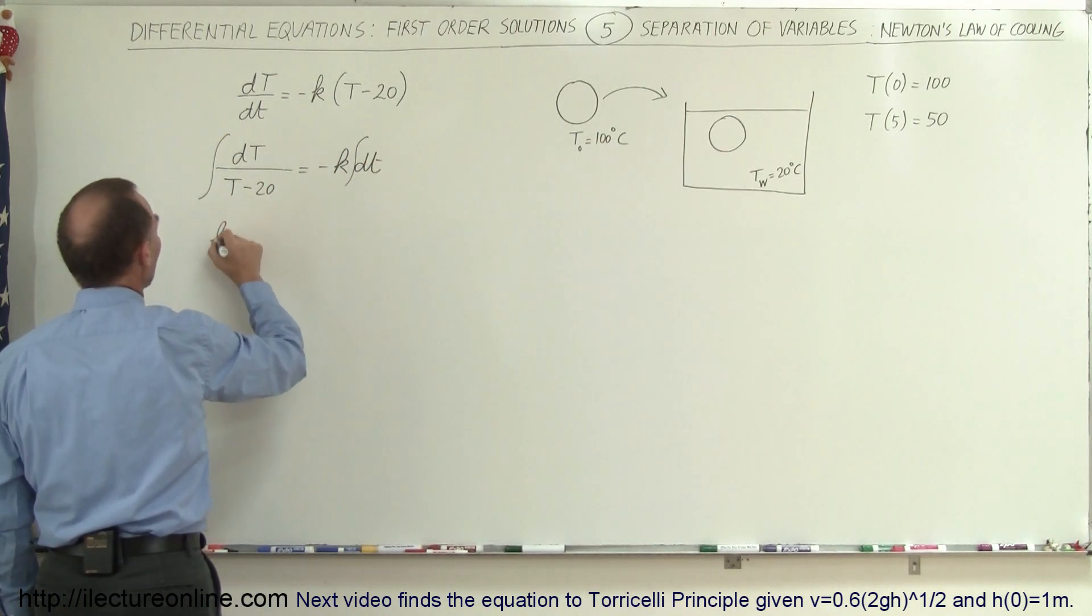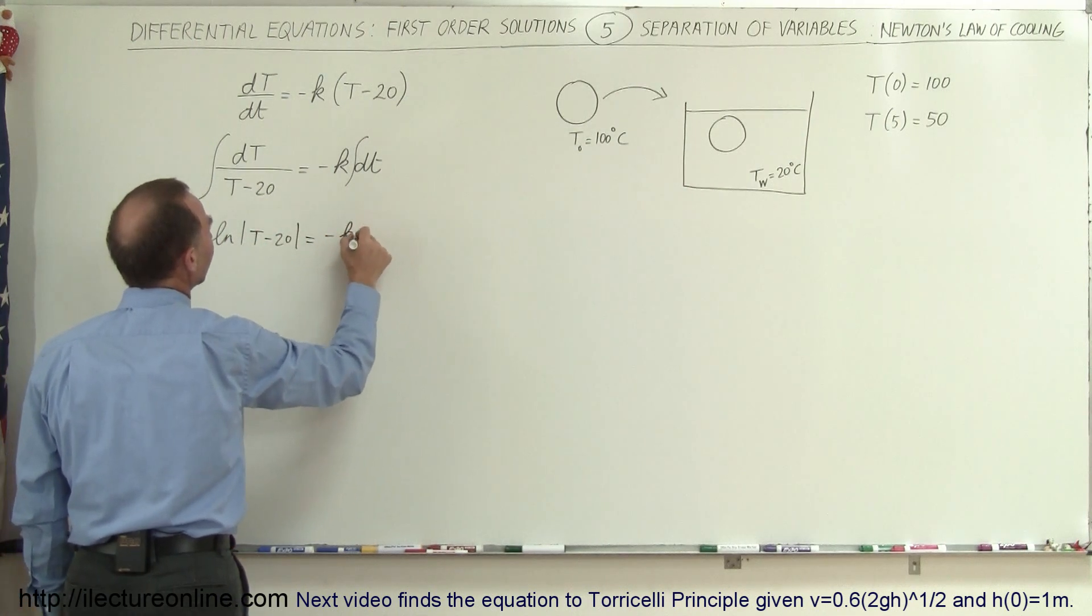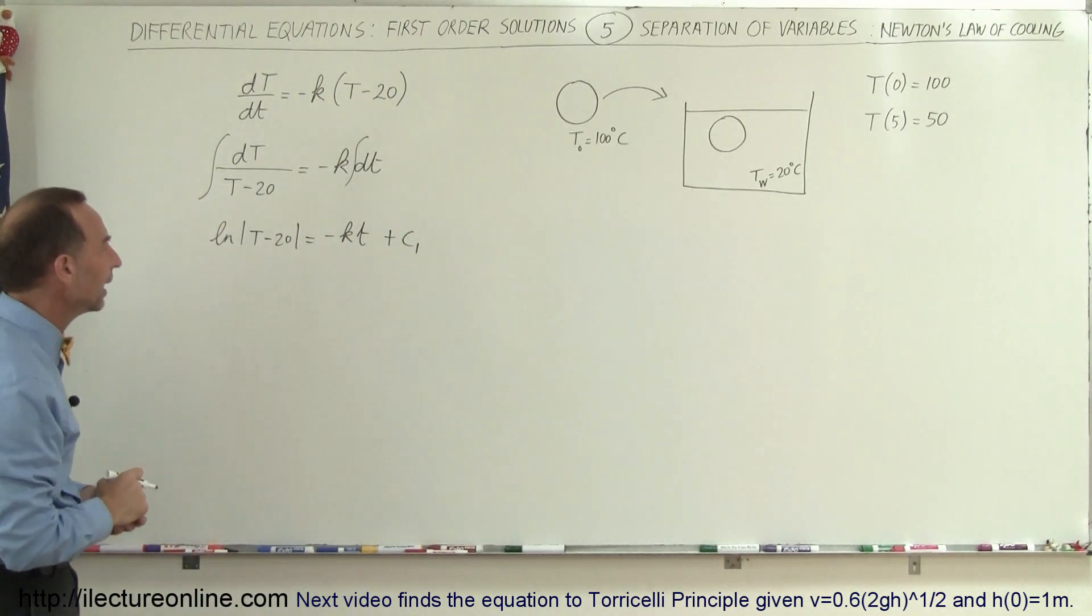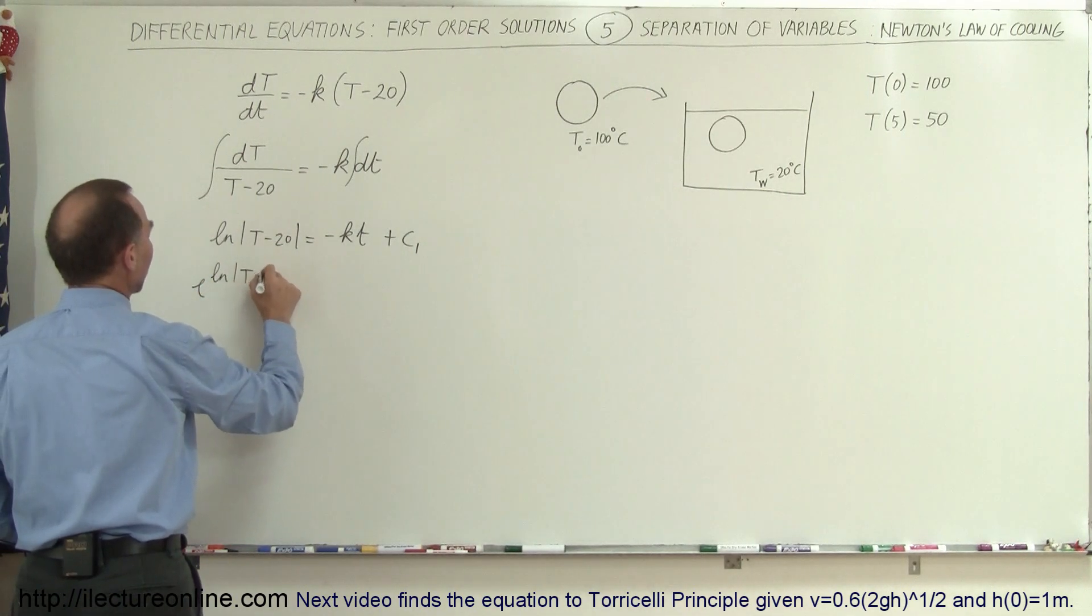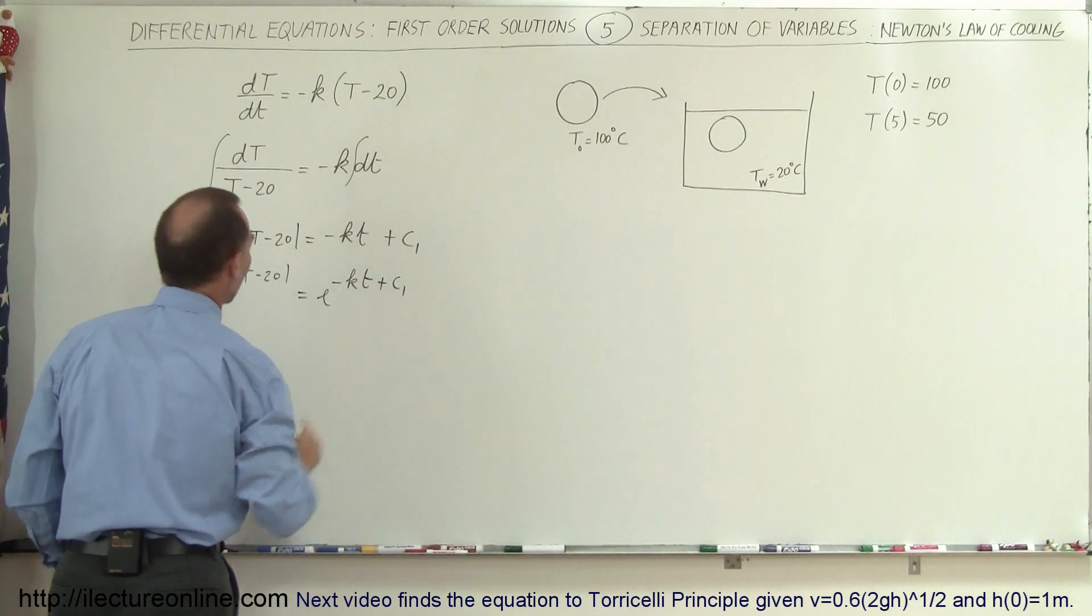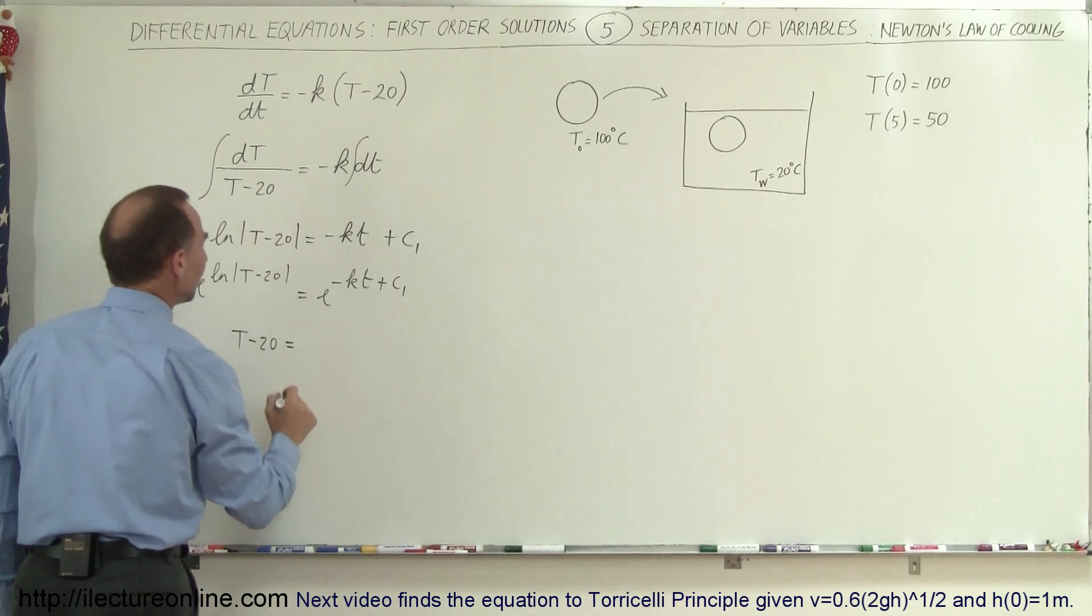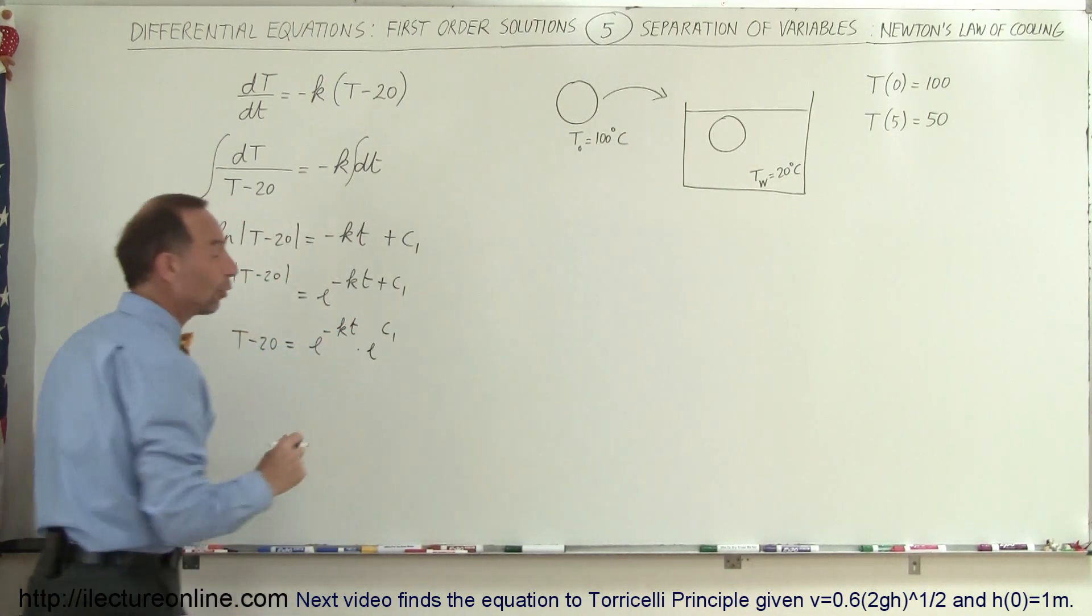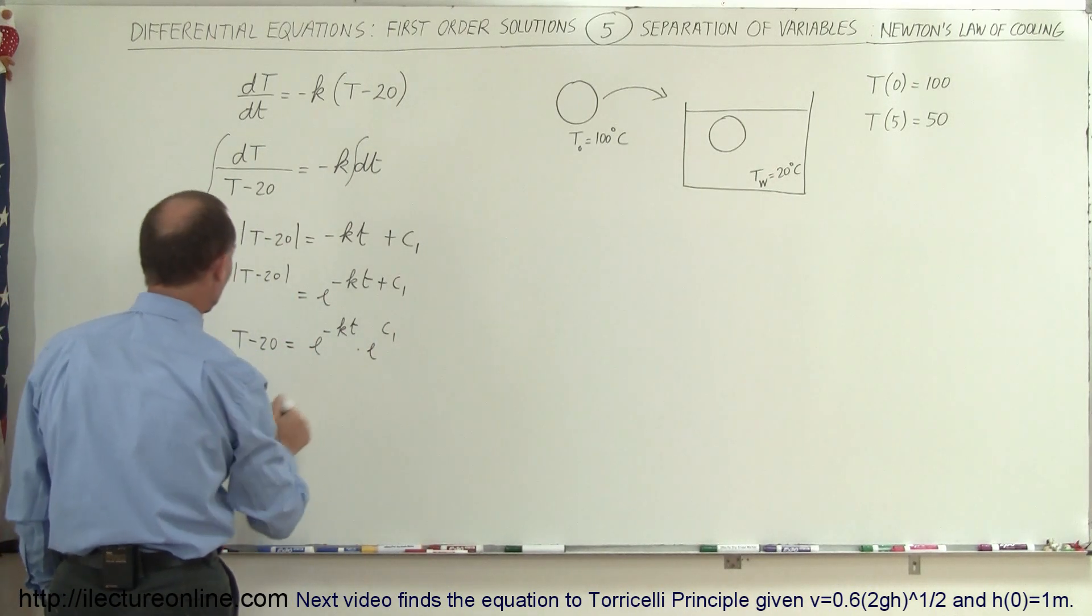On the left side we get the natural log of the quantity T minus 20 equals minus K times t plus a constant of integration, which I'll write as C1 because we're going to change that later. Now we take the antilog of both sides. E to the natural log of T minus 20 equals E to the minus Kt plus C1. This negates to give us T minus 20 equals E to the minus Kt times E to the C1. E to the C1 is simply another constant which I'll put in front.